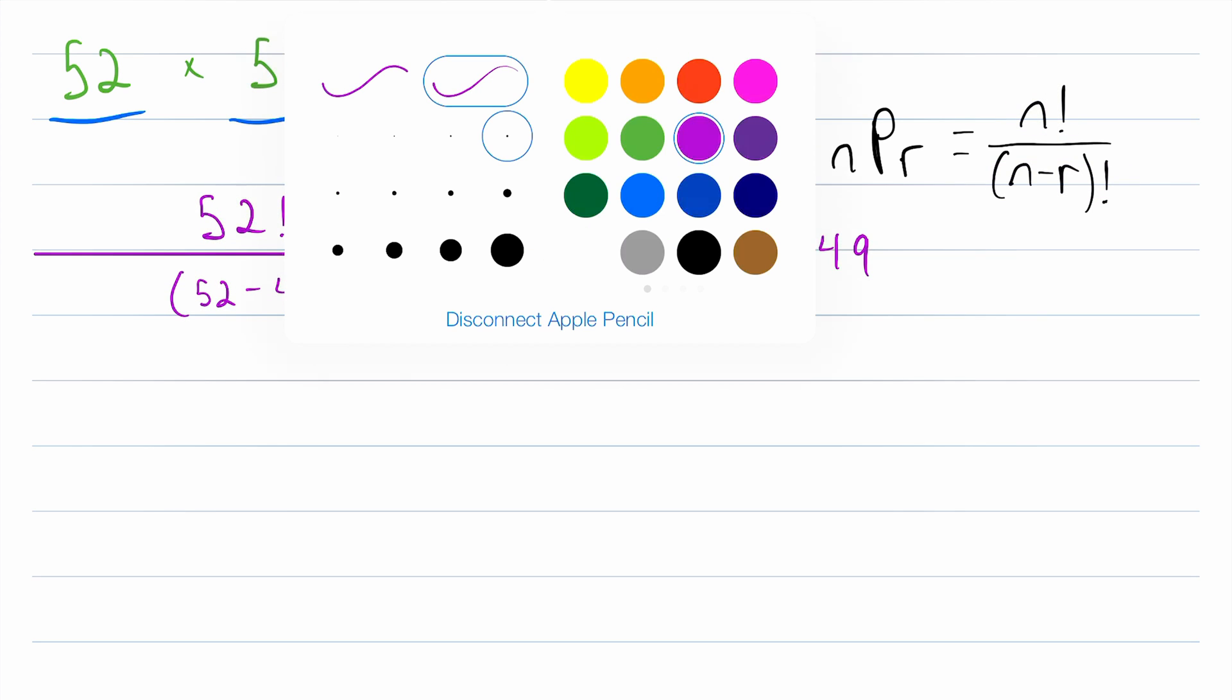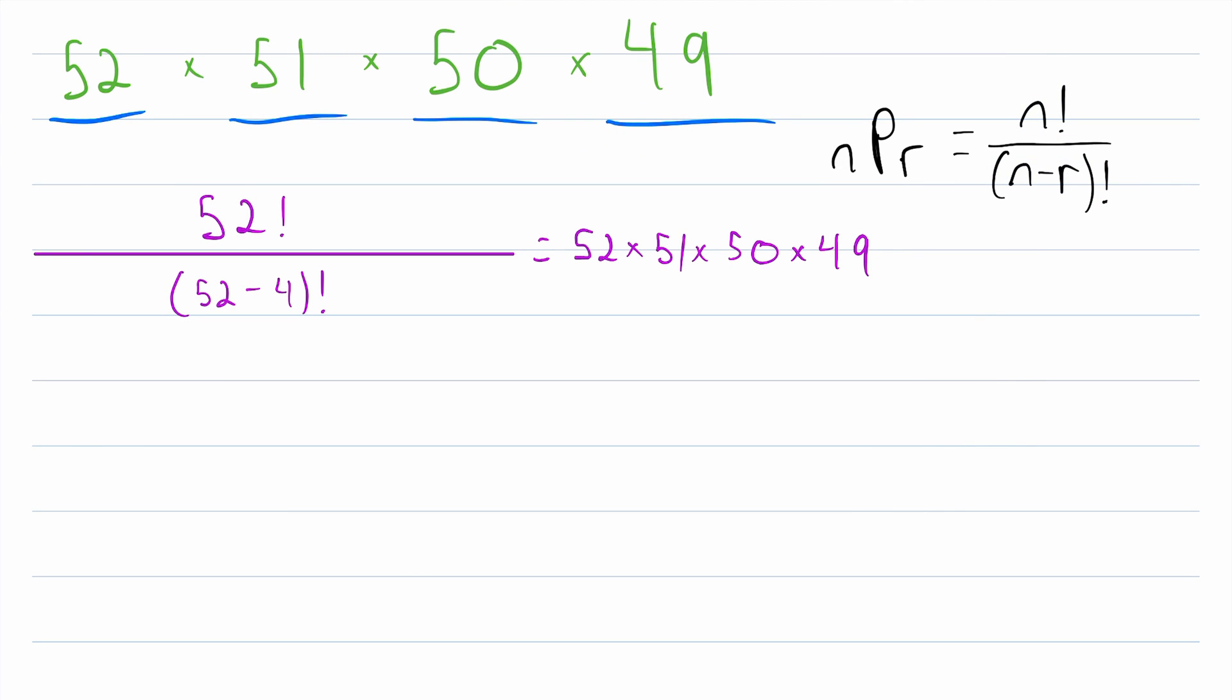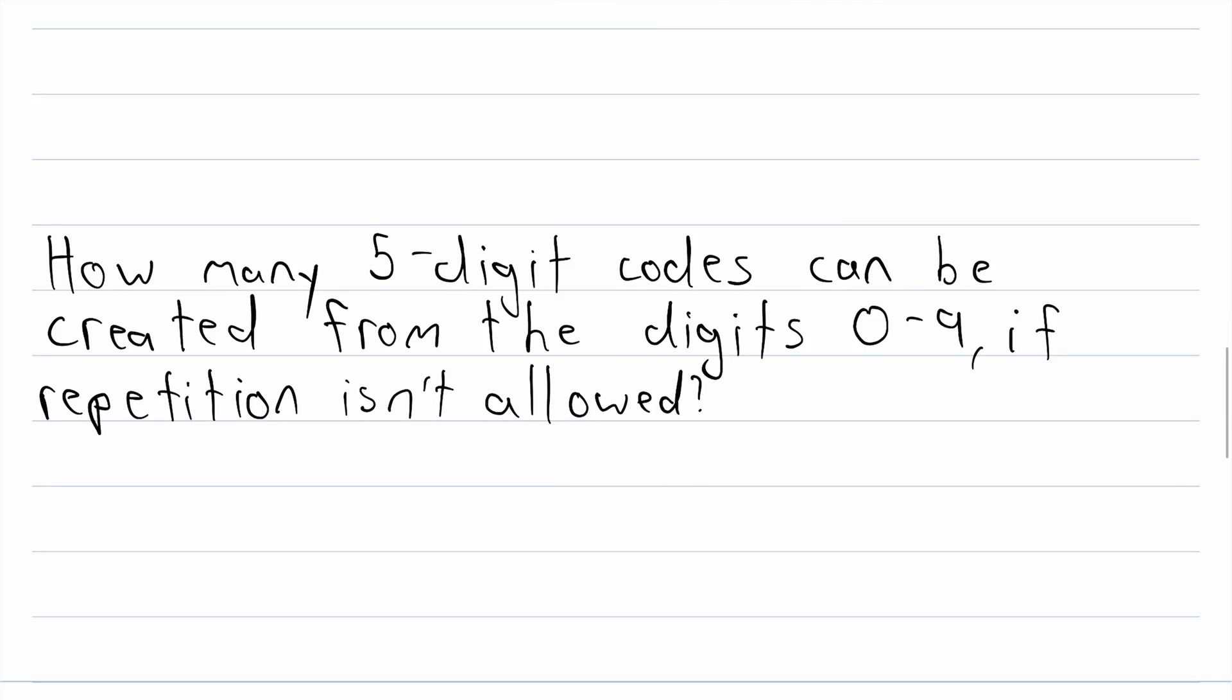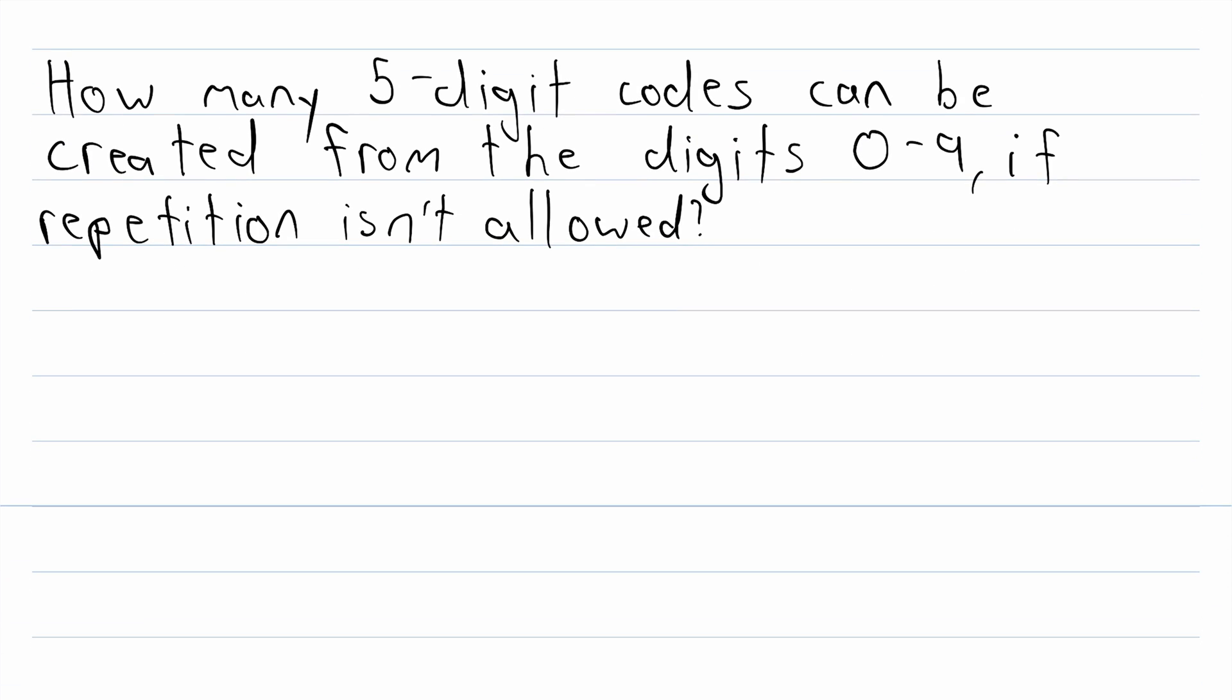If you haven't worked with factorials much, these numbers get very big very quickly. 52 factorial, for example, is an absolutely gargantuan number. Now, before we go, let me give you some example problems, some practice problems. Here's the first one.